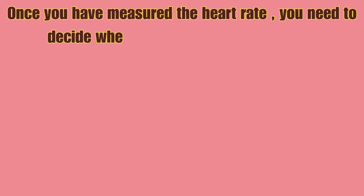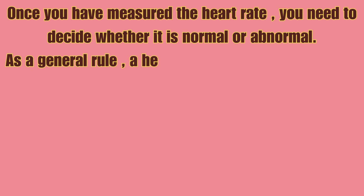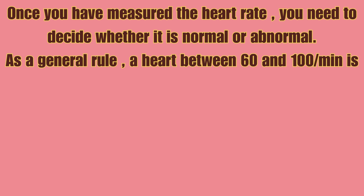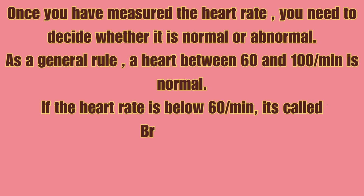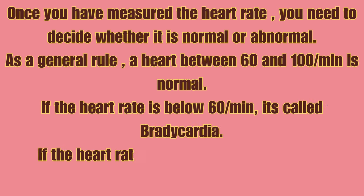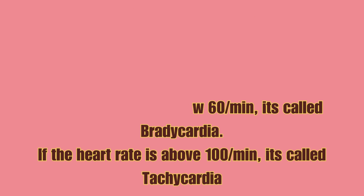Once you have measured the heart rate, you need to decide whether it is normal or abnormal. As a general rule, a heart rate between 60 and 100 per minute is normal. If the heart rate is below 60 per minute, it's called bradycardia. If the heart rate is above 100 per minute, it's called tachycardia.